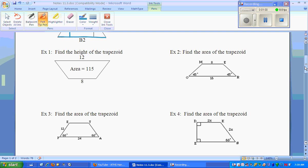Now, knowing that formula, let's jump into some examples. We want to find the height of the trapezoid. So we want the height of the trapezoid. We have the area is 115, one base is 12, one base is 8. Well, this is pretty simple. You just drop it right into the formula.